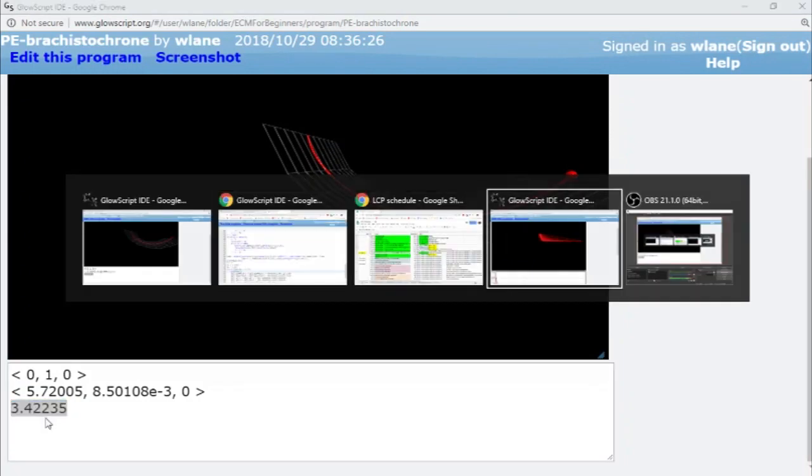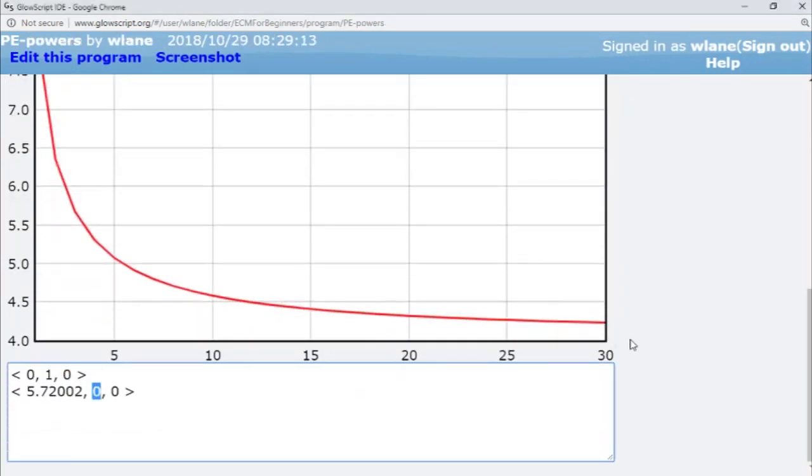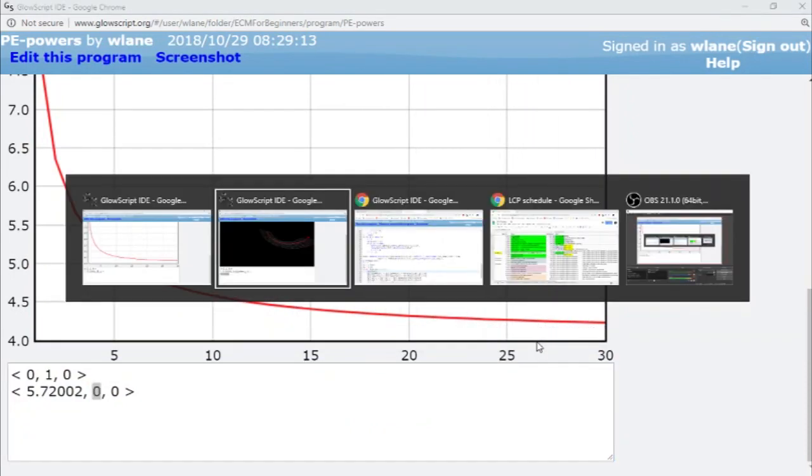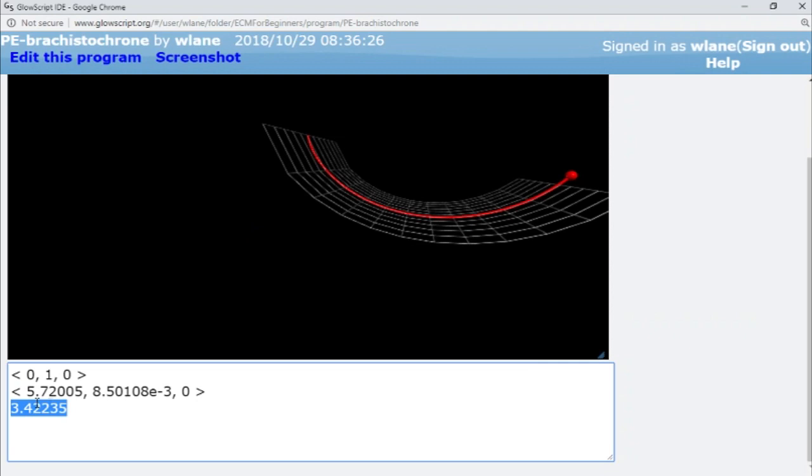And you can see that the minimum time is actually 3.42, which is way less than anything we got on this graph here. This was leveling out. It hadn't even gotten below 4 yet. And this is showing me that the minimum is 3.42.